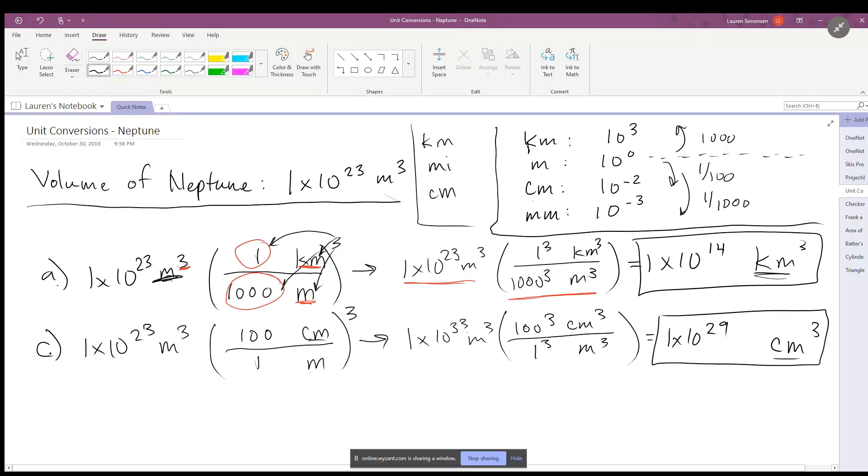Now look at these two answers here. Let's see if they make sense. We're going from meters to kilometers. Kilometers are a lot bigger than meters, so it makes sense that we have a 14th power. We have less kilometers than we do meters. Now let's look at our centimeters answer. We have 23 meters cubed and then we're going to centimeters. Centimeters is a lot smaller, so we should have more. You should have 29 versus 23.